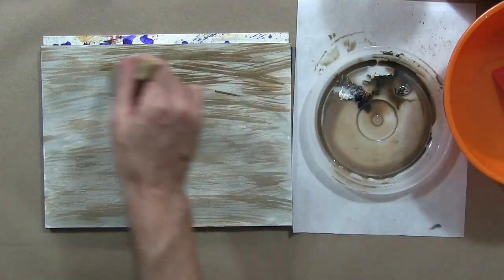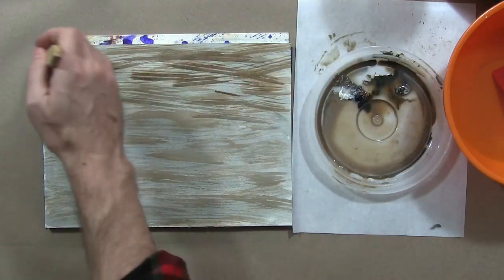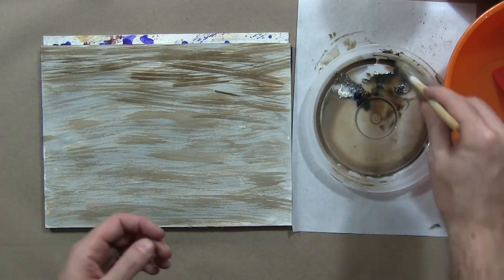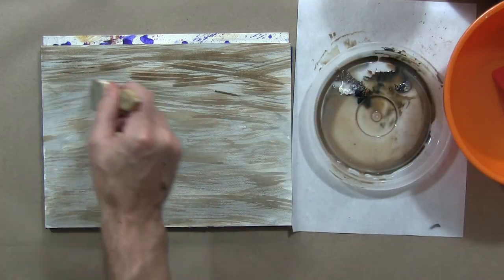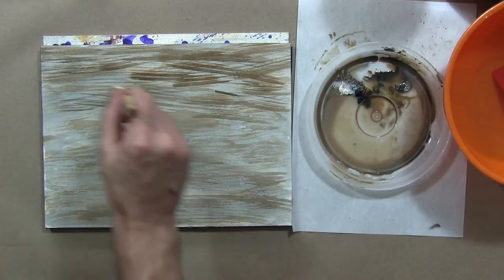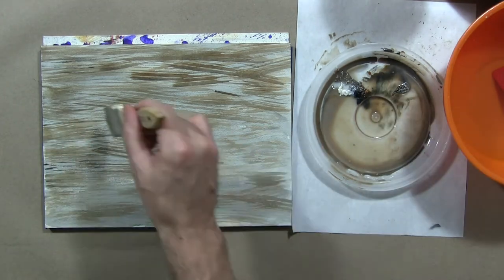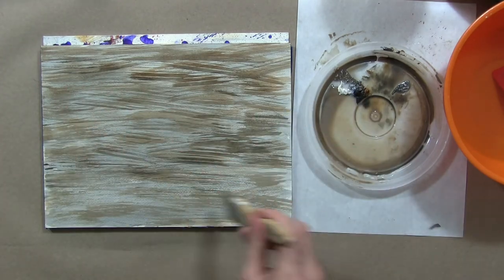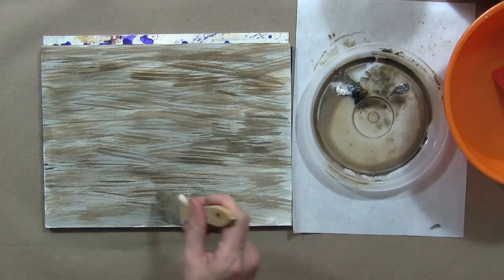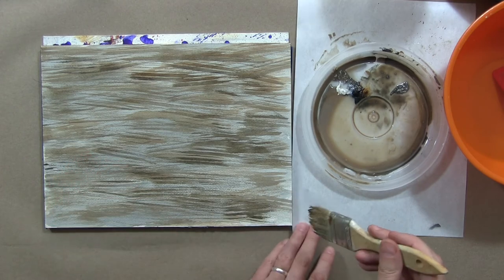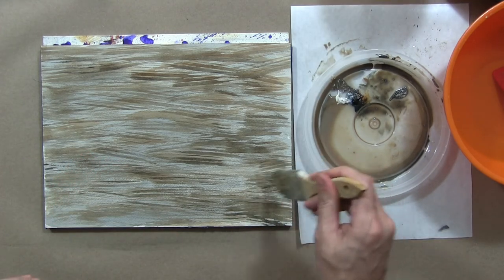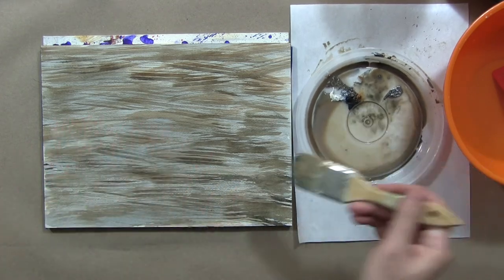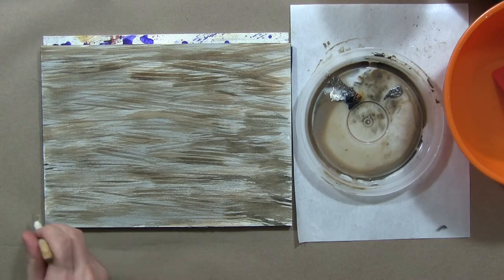Whether it's charcoal, graphite, ink, or even paints—those are all things that you could work on top of this with. One way it could be sort of a smart approach to this is if you were doing a representational scene, just sort of blocking in the shadow areas with this technique.